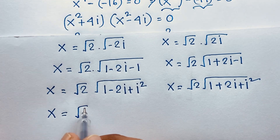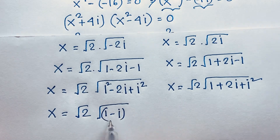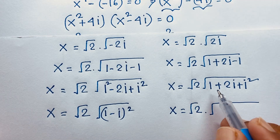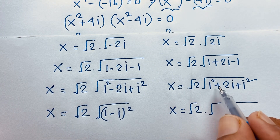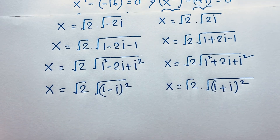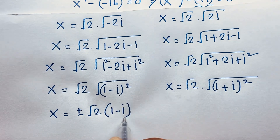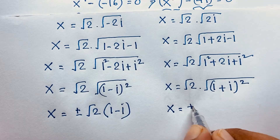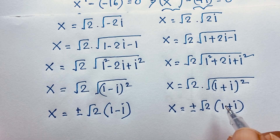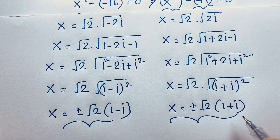Applying the identity a squared minus 2ab plus b squared equals a minus b whole squared, we get x equals plus or minus square root 2 times 1 minus i. And applying a squared plus 2ab plus b squared equals 1 plus i whole squared, we get x equals plus or minus square root 2 times 1 plus i. This is our final answer to this complex number math Olympiad question — 4 roots total. Thank you all. Goodbye, take care everyone.